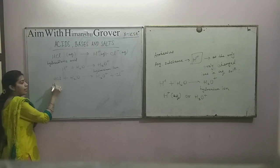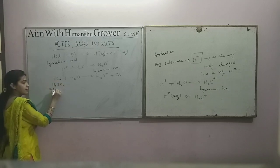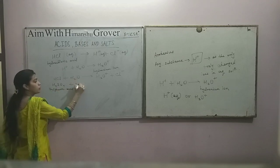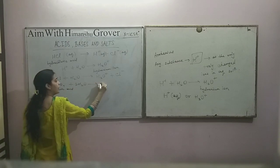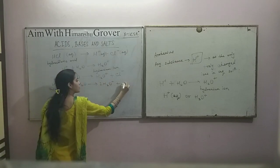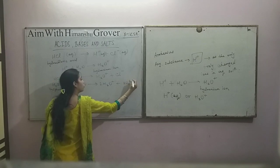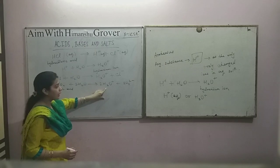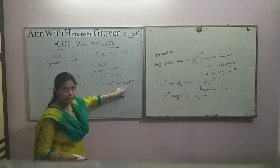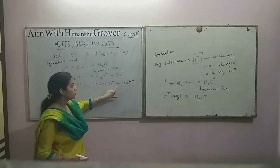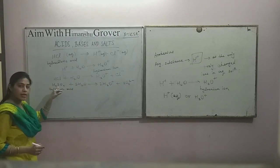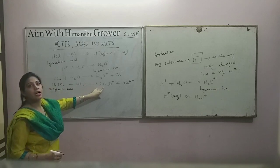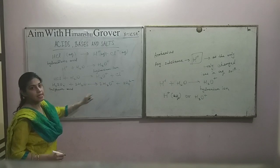Next example: H2SO4, sulfuric acid. It combines with two water molecules and forms H3O+ plus SO4(2-). SO4(2-) is the sulfate ion. Hydronium ion is formed as the only positively charged ion and the negative ion formed is the sulfate ion. So sulfuric acid is also an acid because it produces hydronium ions as the only positively charged ions in its aqueous state.